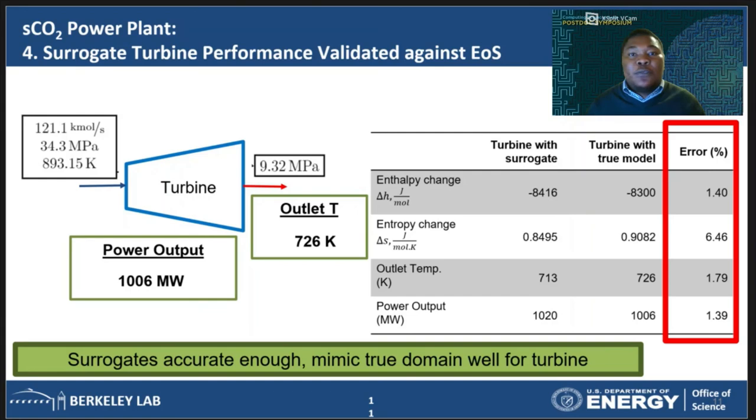What this tells us is that we've been able to solve the entire power plant problem without having to resort to the EOS model during optimization. The approach and workflow described here can and have been applied to other optimization problems with some success.